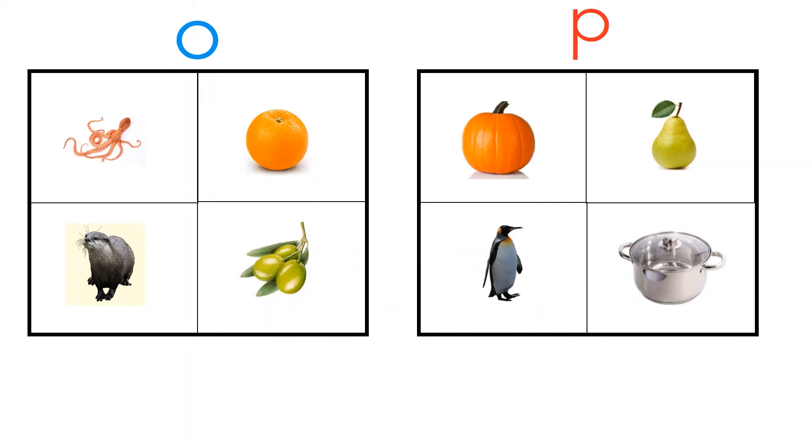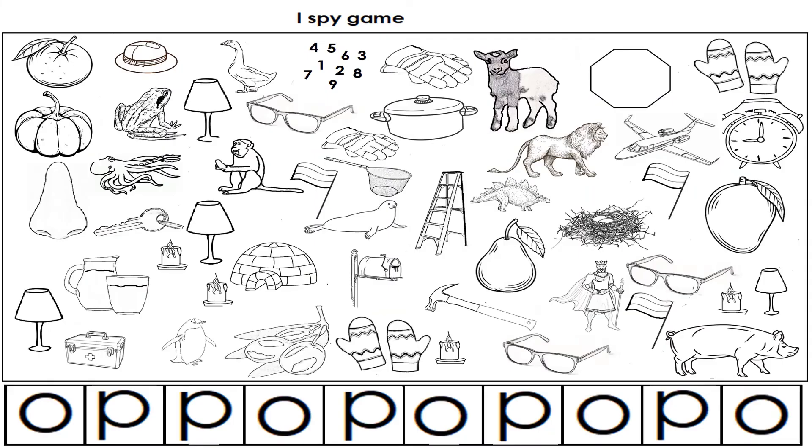Let's play the I spy game. I spy with my little eye something start with O. We are going to find something start with O. Oh, I found it here. Octagon, octagon, octagon. I am going to circle that.